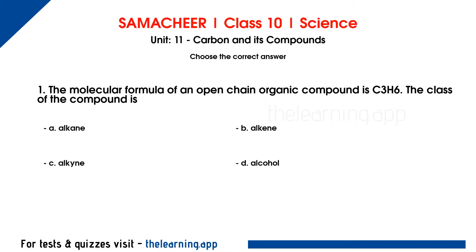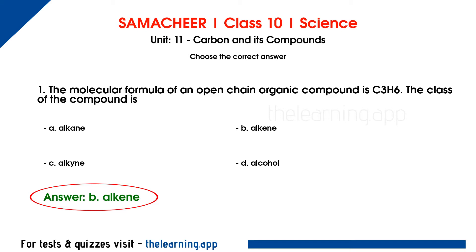The molecular formula of an open chain organic compound is C3H6. The class of the compound is dash. Options are A. Alkane, B. Alkene, C. Alkyne, D. Alcohol. Correct answer is option B, Alkene. Hydrocarbons with a double bond are called alkenes. Carbon atoms having more than single bonds — so that is alkene. So C3H6 is alkene.